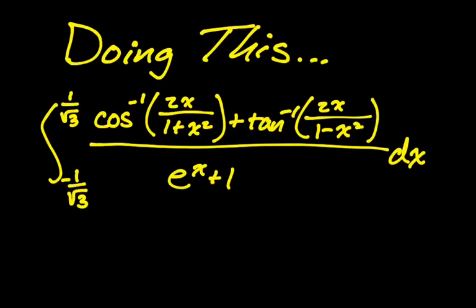Okay, in this video we're going to be doing this definite integral. It's pretty challenging. I found it in a JEE challenging review problems book that I found online, and I thought I'd give it a shot. So it's going to be the integral from negative 1 over root 3 to 1 over root 3, which is symmetric, and you would think that would have something to do with it, but I didn't use that throughout this. So it's arc cosine of 2x over 1 plus x squared plus arc tangent of 2x over 1 minus x squared all over e to the x plus 1 dx. So we're going to try to do it.